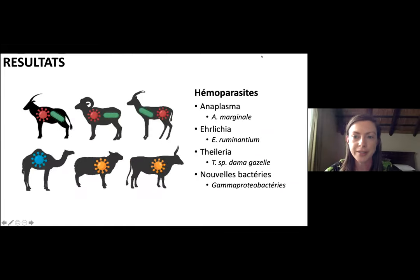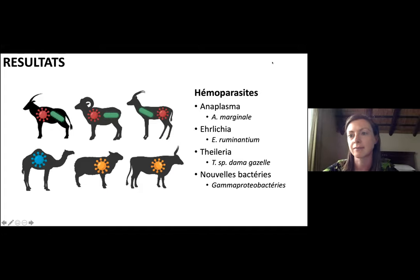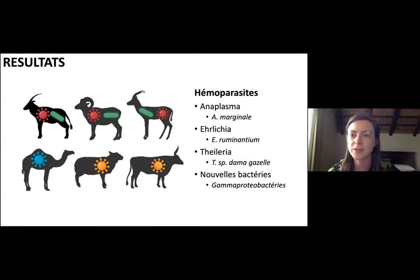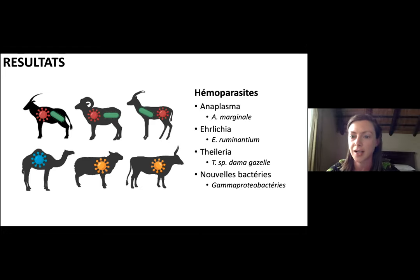In terms of results, we're still at quite an early stage of the project, but already we've identified that quite a lot of these animals are carrying blood pathogens and blood parasites. We've found some species that are commonly shared with livestock — things like Anaplasma marginale and Ehrlichia ruminantium.